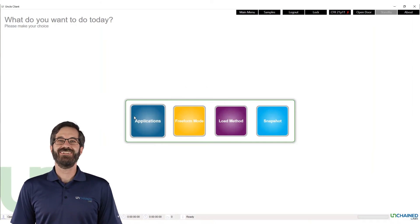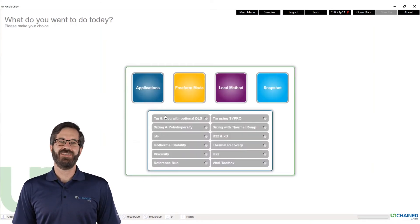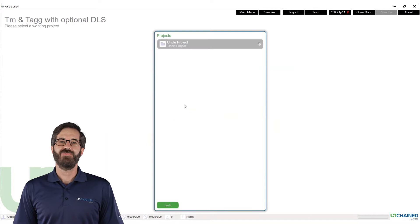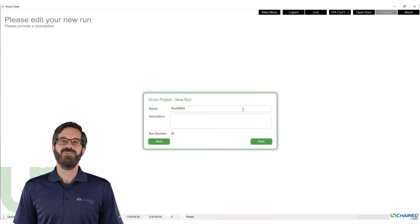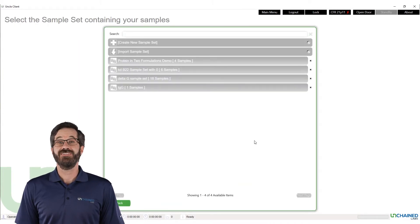From UNCLE's applications menu, we select the TM-TAG with DLS application. First, we pick a project folder and name our experiment. Next, we tell UNCLE what samples we're running. We can choose an existing sample set, populate a new sample set manually, or we can simply import and pull in all the information from an Excel file.